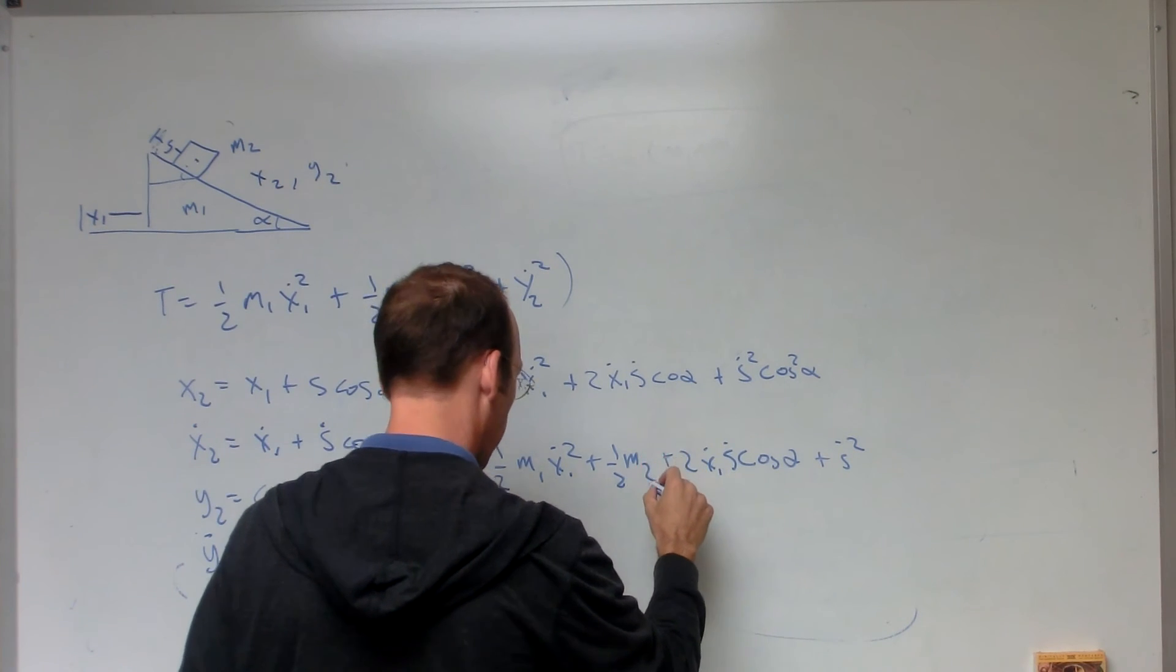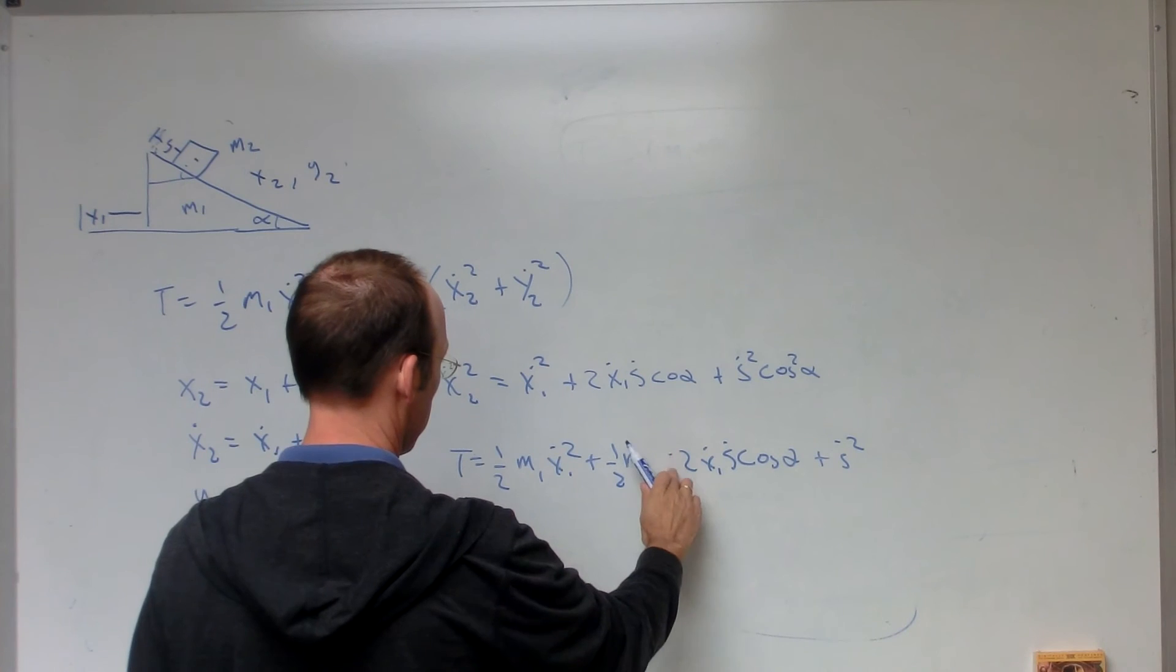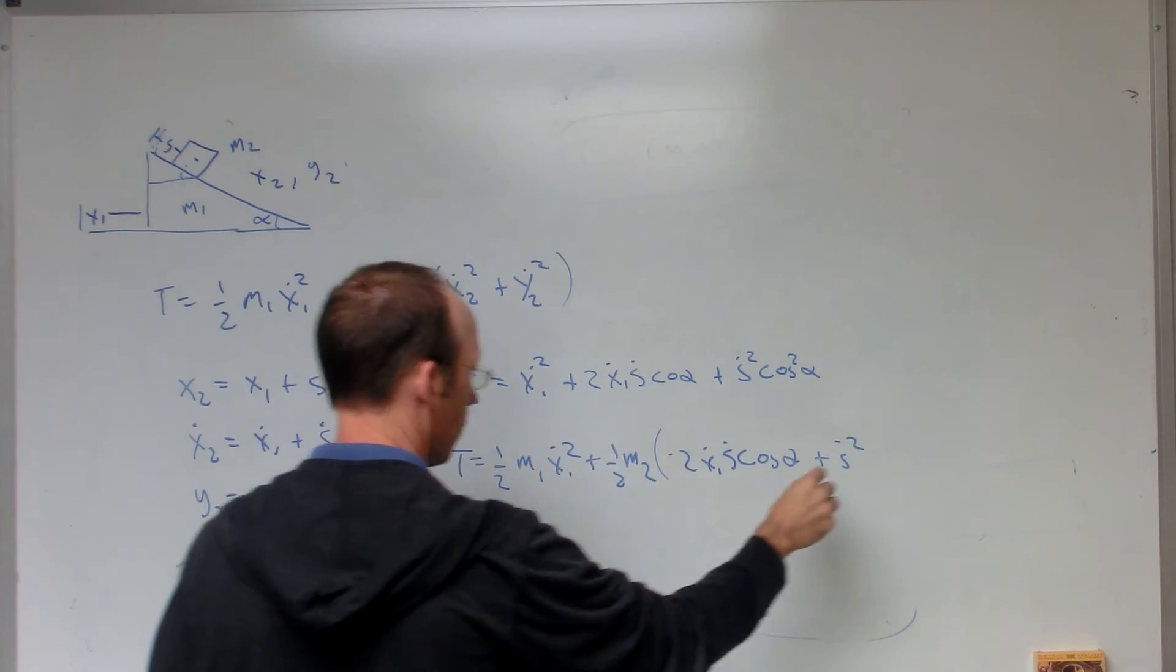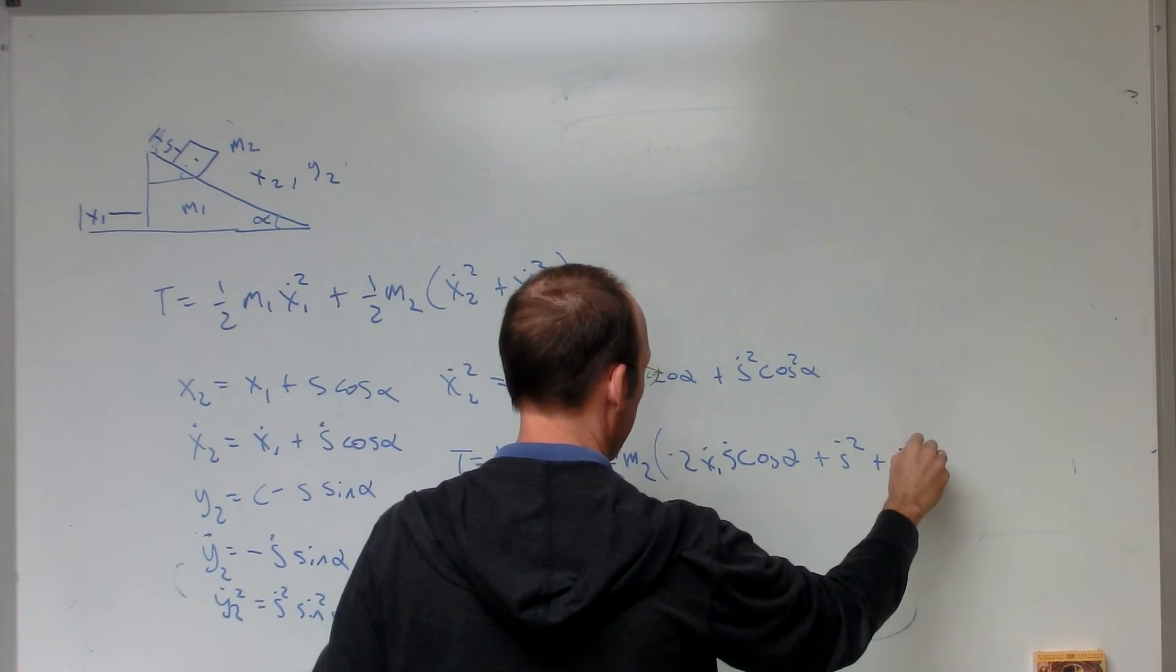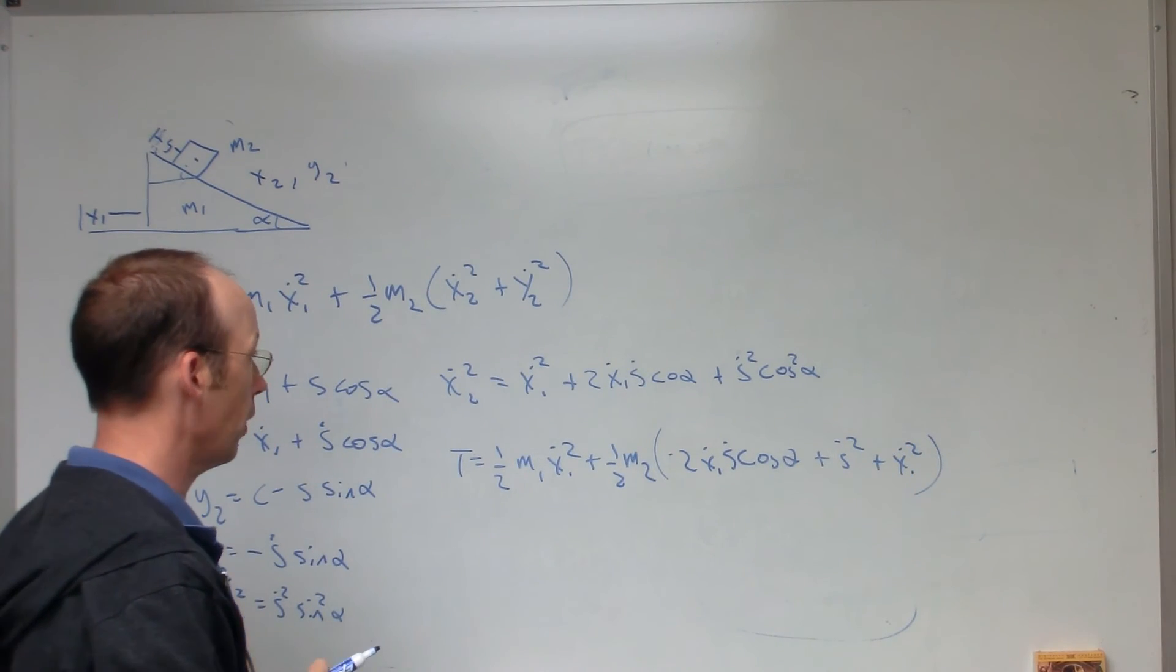One half m, I missed a term. Okay, I missed that x1, x1 dot squared. Good.